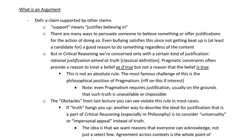In critical reasoning, we're not concerned with just any type of justification or reason to believe a conclusion — we're interested in rational justification aimed at truth. That's the most classical definition of argumentative justification. This bullying situation is like the pragmatic case: the bully could maybe convince you to treat a belief as if it was true, but they can't give you a reason to treat the belief as actually true.